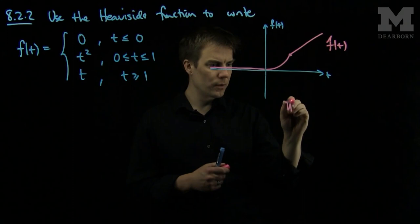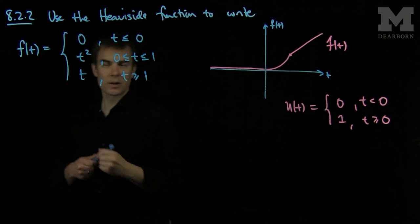And we recall that u of t, the Heaviside function, is 0 if t is less than 0 and 1 if t is bigger than or equal to 0.